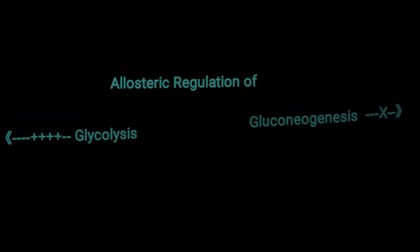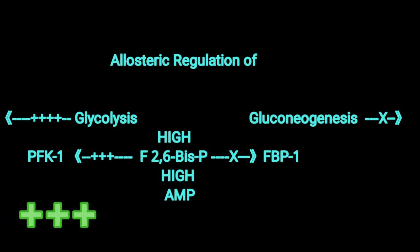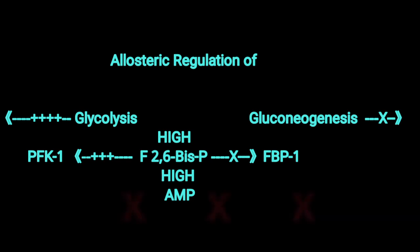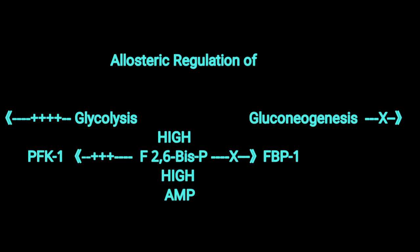In summary, two important allosteric regulators — AMP and fructose 2,6-bisphosphate — when elevated in the liver, will activate PFK1 while simultaneously inhibiting FBP1, or fructose 1,6-bisphosphatase. These effects on key enzymes in both glycolysis and gluconeogenesis will help ensure that these two pathways are highly unlikely to occur at the same time in the liver.